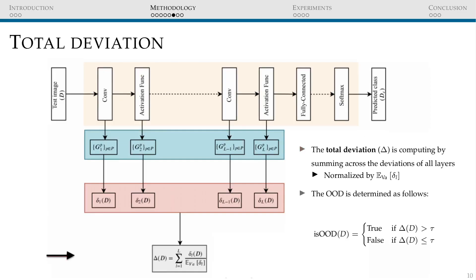Finally, the method computes the total deviation by summing its layer-wise deviations across all the layers. It normalizes this value by the expected deviation as computed using the validation data, which was chosen as a subset of the training data, so this expected deviation does not depend on seeing any OOD examples. This normalizing term is applied to weight the contribution of the layers according to their importance. The OOD detection of the test sample is determined according to a threshold previously defined to achieve a given true positive rate on the training set.